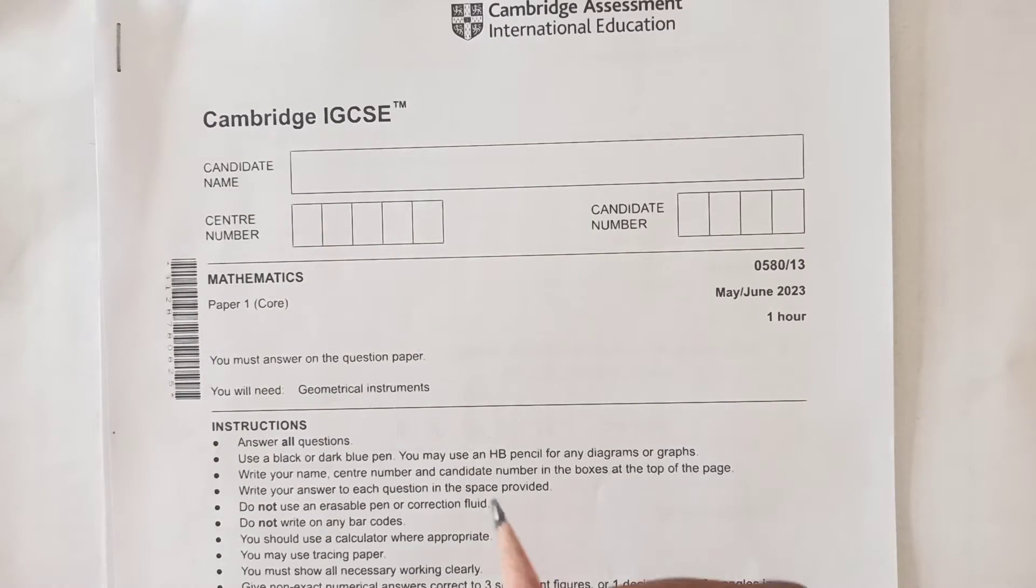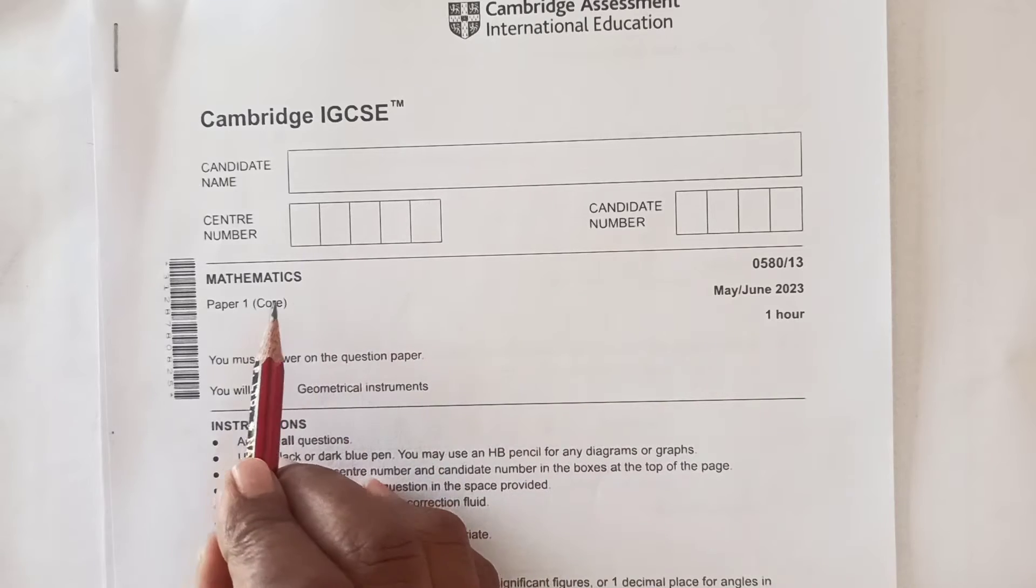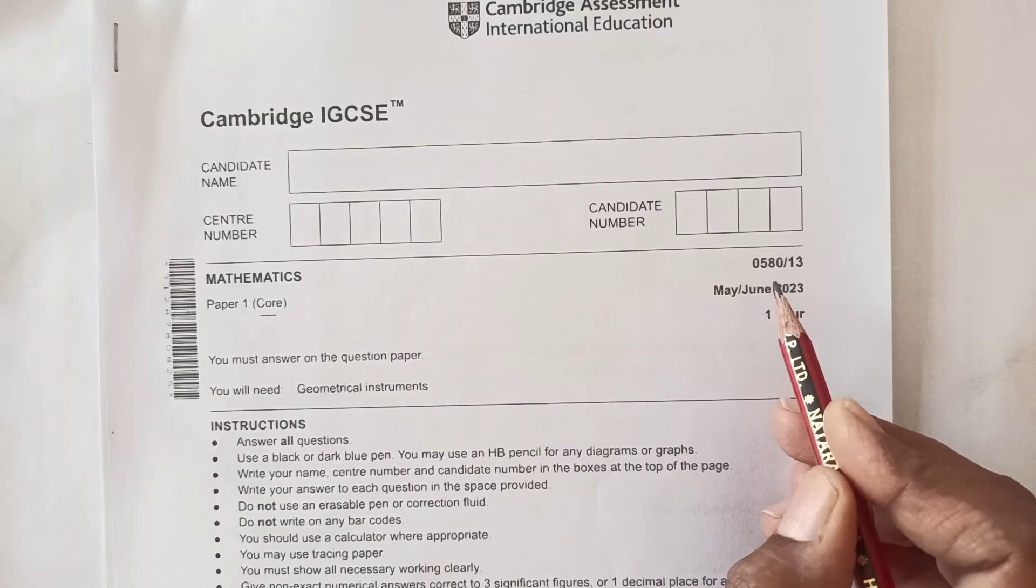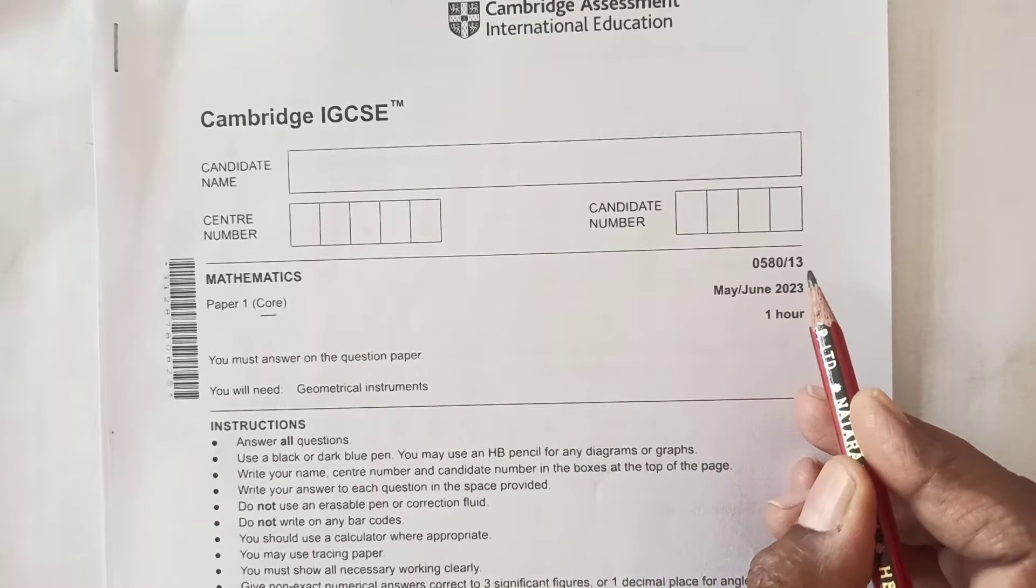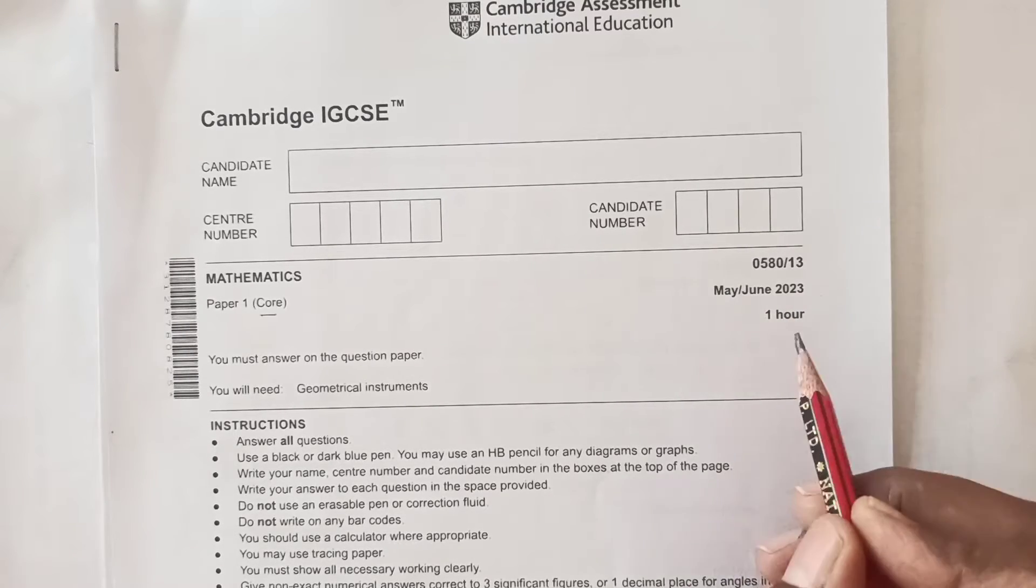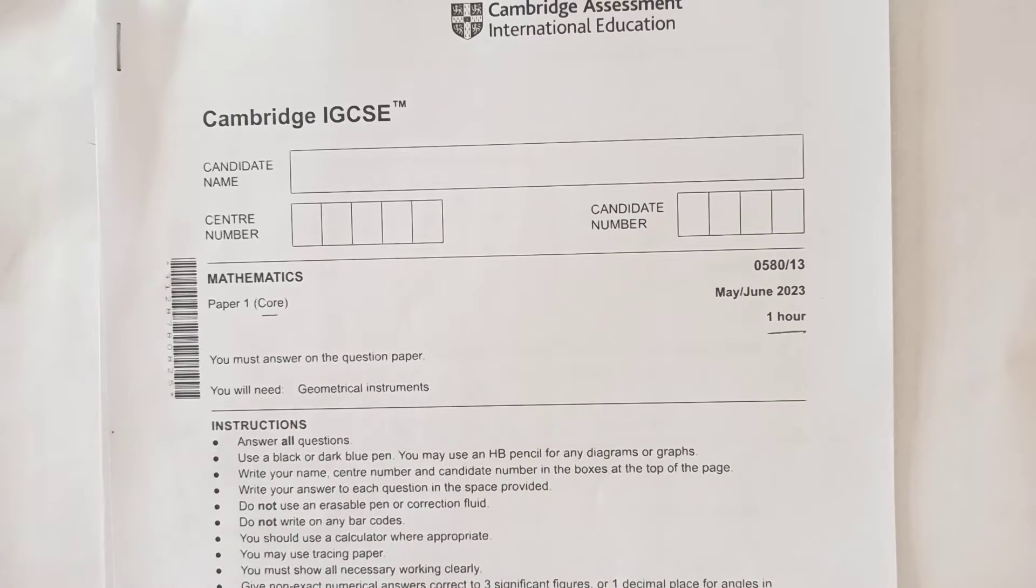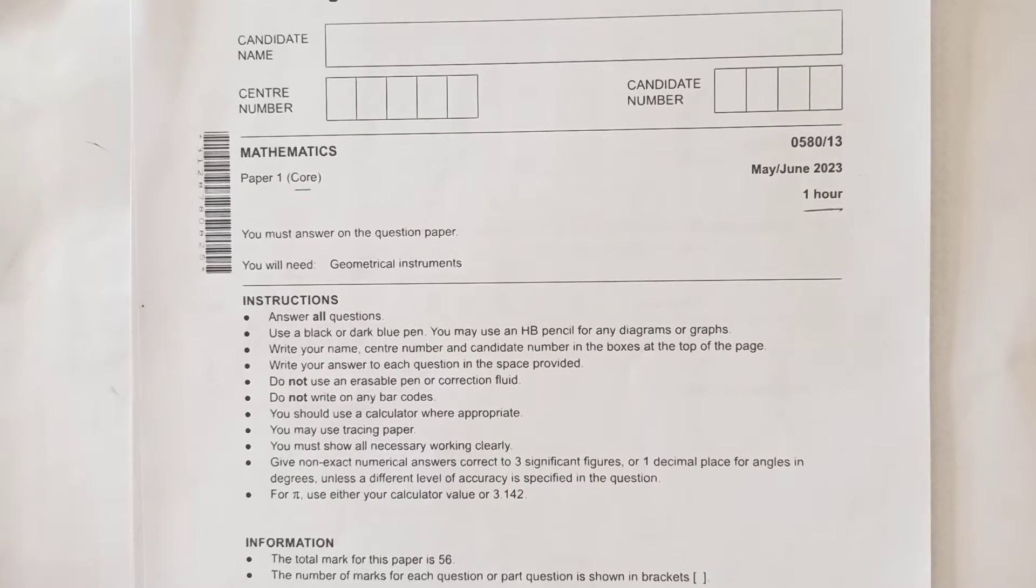Hello guys, welcome back to the channel. Today we will be going through Cambridge IGCSE Mathematics Paper 1, 0580/13 from May/June 2023. This paper needs an hour to complete and the instructions are there.